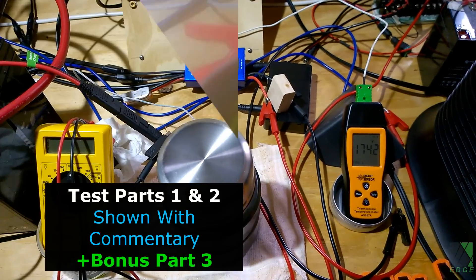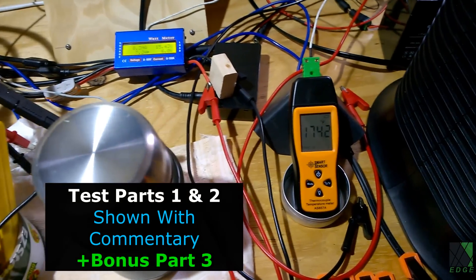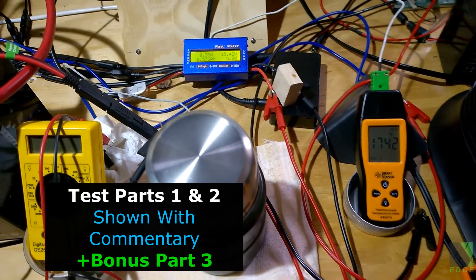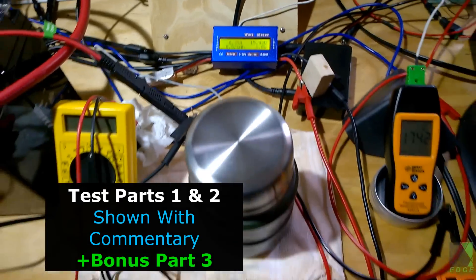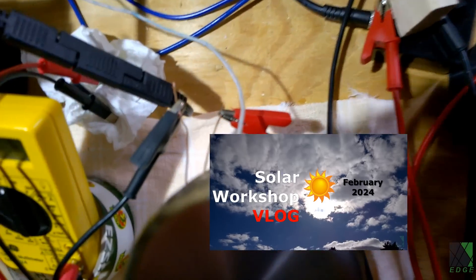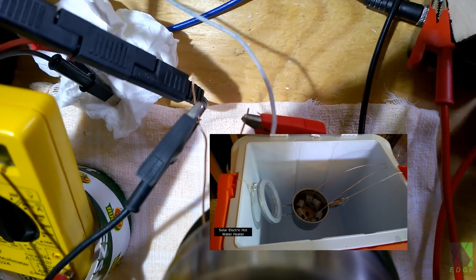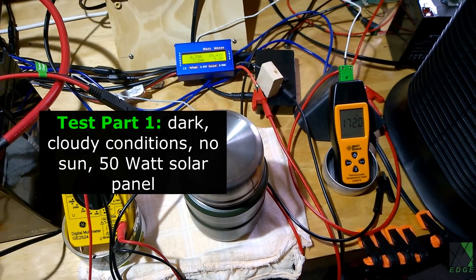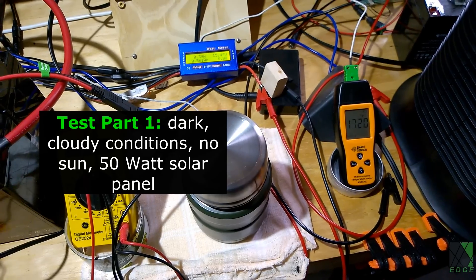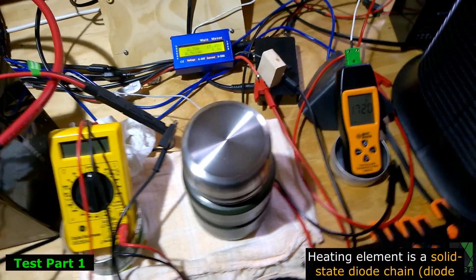Here is a collection of footage from my solar workshop showing the latest tests. I have extensively researched and documented solar-powered diode chains as heating elements—please check the description to see more of that work. In my last solar workshop vlog, I mentioned I'm working on a larger version of this solar cooker as well as a solar-powered hot water heater. This is a test of what I believe to be the world's most efficient solar electric cooker.